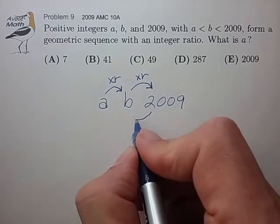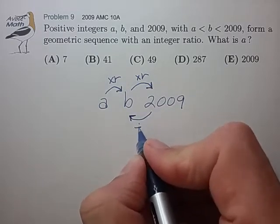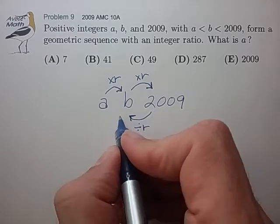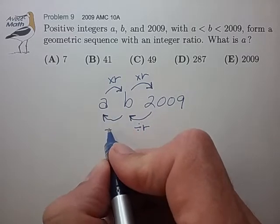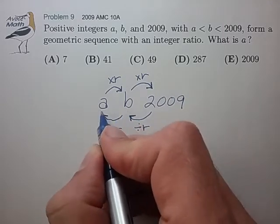Conversely, if we divide by that ratio, we can get from 2009 to b. Divide again, we get from b to a.